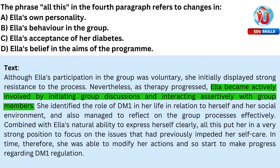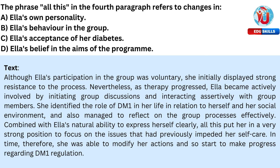Let's go through each option to see which one best captures the meaning of 'all this.' Option A, Ella's own personality: the text doesn't discuss a shift in her personality, but rather highlights specific actions and engagement in the group. Option B, Ella's behavior in the group: this aligns with the text because 'all this' includes her active participation, initiating discussions, assertive interactions, and self-reflection, which are all changes in her behavior within the group.